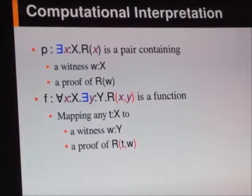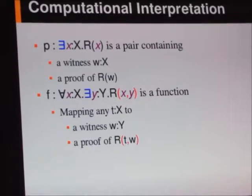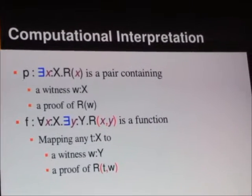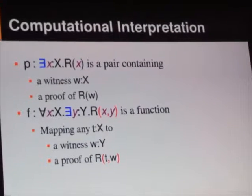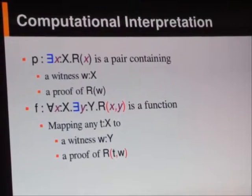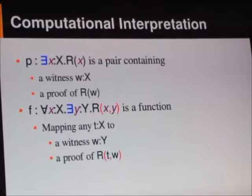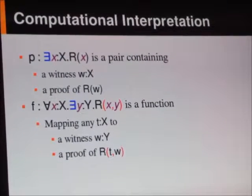And so we have this sort of computational interpretation of proof objects, which are proving our logical theorems. So P, if P is a proof object of there exists X R of X,